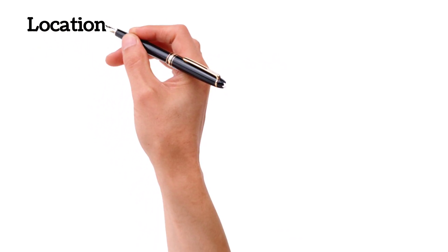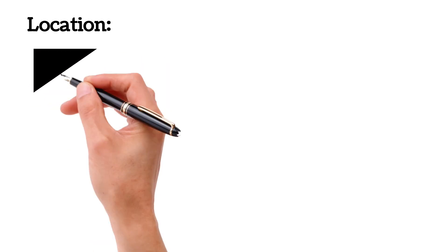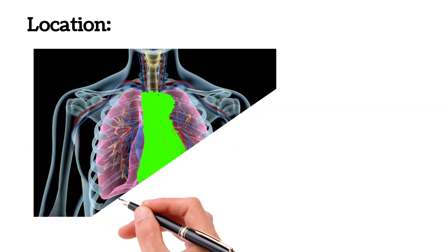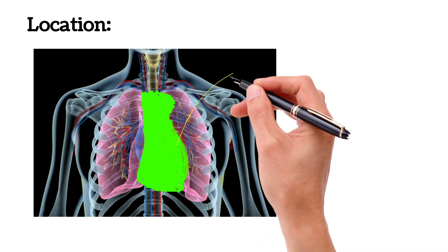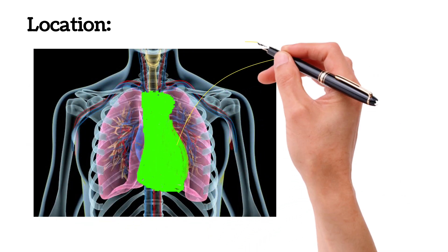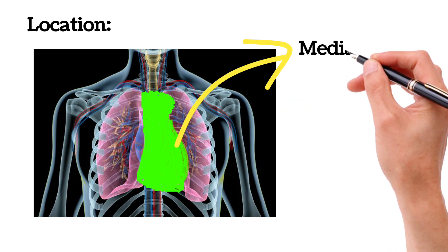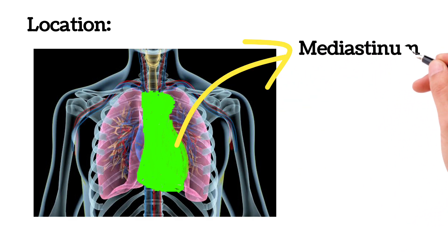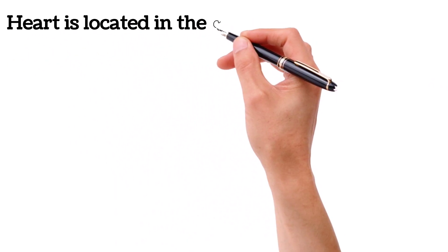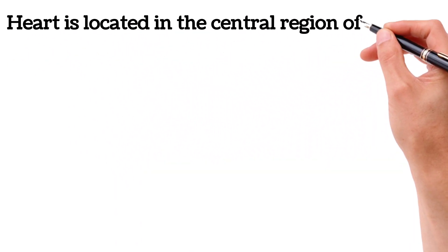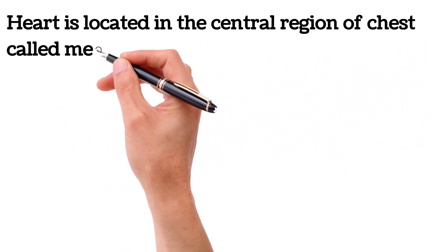Location of Heart. The heart is located in the central region of the thorax called the mediastinum, as shown in the diagram.